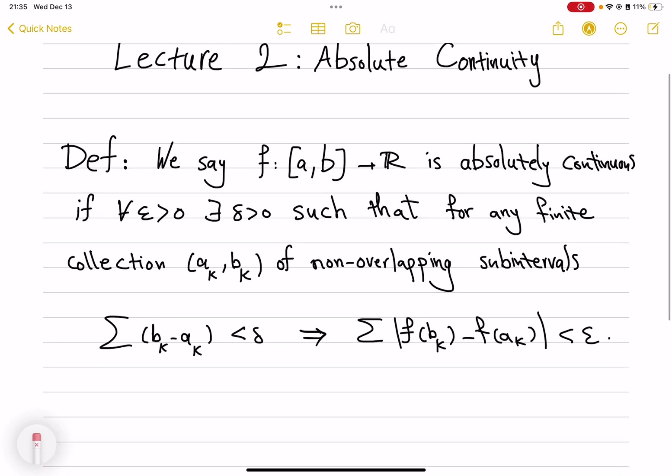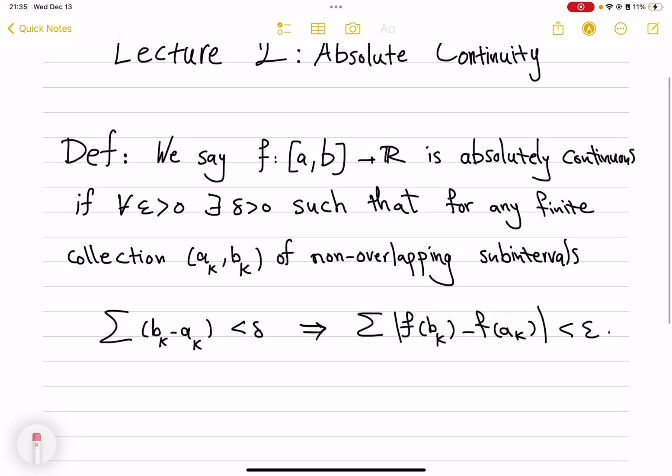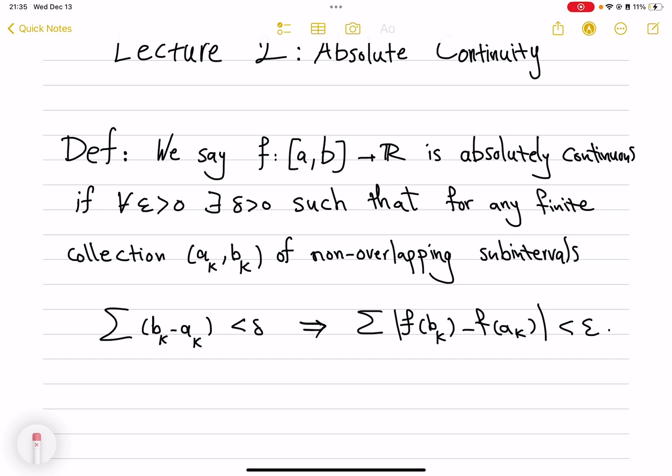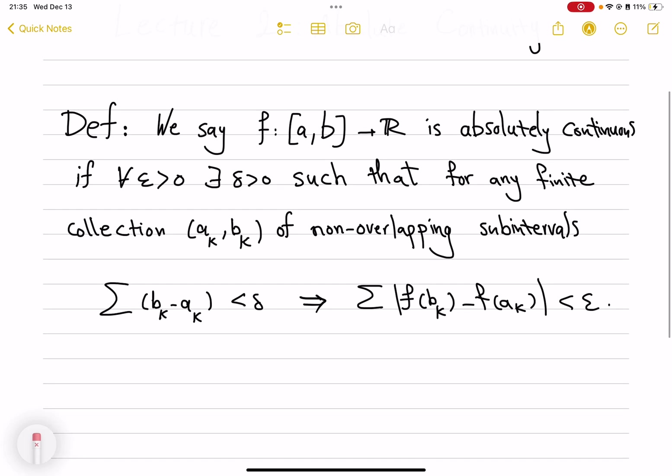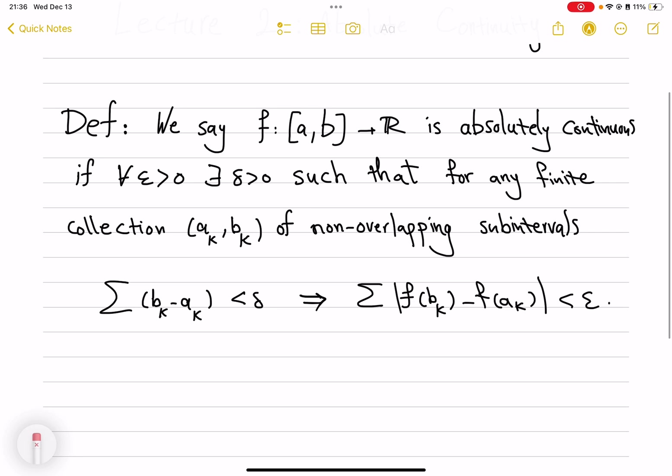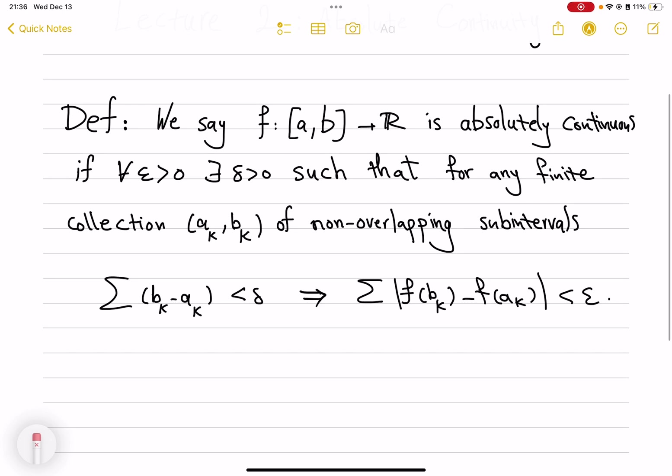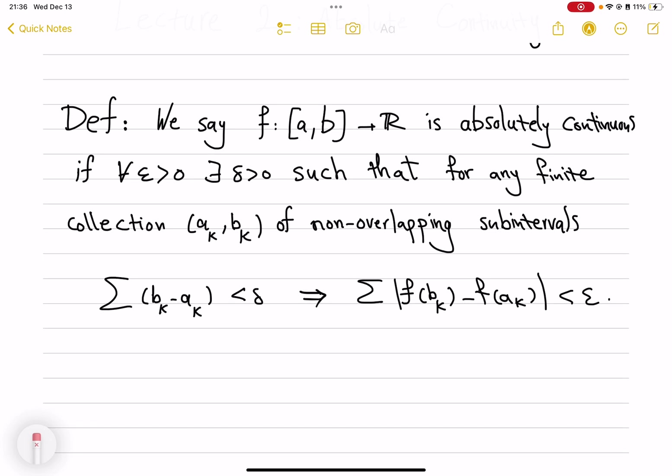First, recall by the definition that absolutely continuous functions are those so that for every epsilon there is a delta positive, so that for every finite collection of non-overlapping open intervals, if their length adds up to less than delta, the differences of f value at the endpoints do not add up to more than epsilon. I encourage you to pause here, actually have a good look at this definition, and pay attention to details.